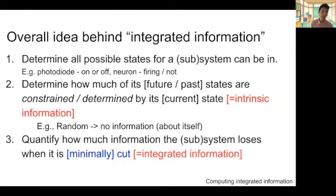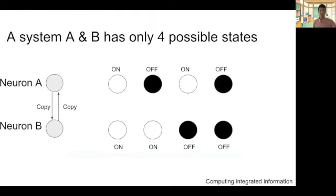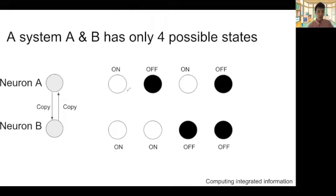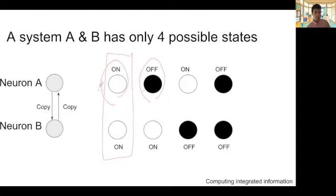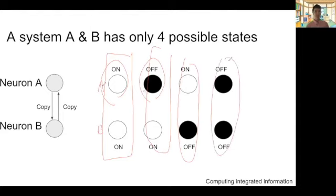The next step is quantifying how much information the subsystem loses when it is minimally cut. The amount of loss is the integrated information. Let's consider a simple example with hypothetical neurons A and B, which copy their states to each other at different time steps. This neuron system has only two states per neuron — either on or off — so A could be on or off, B could be on or off, and AB itself has four possible states.